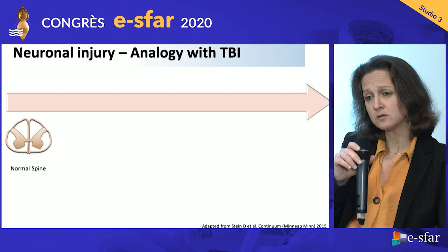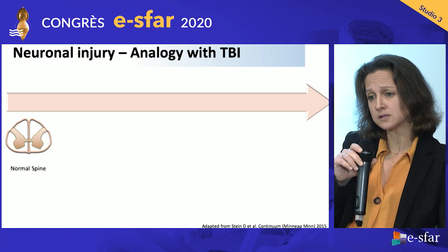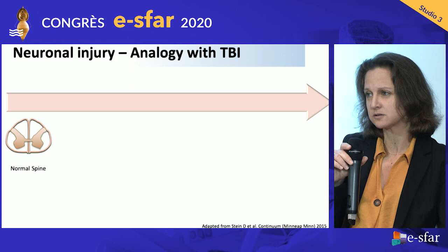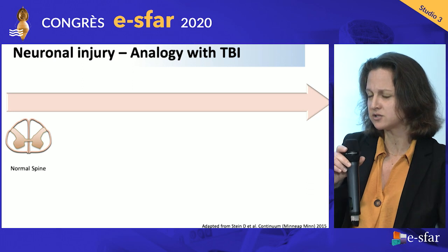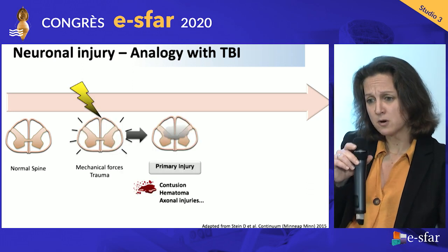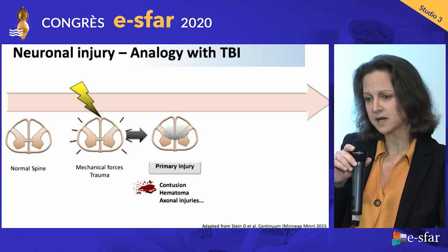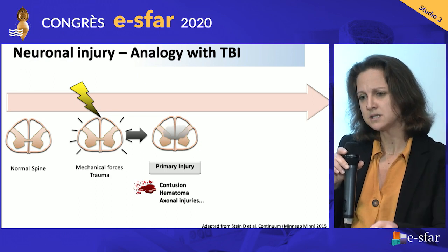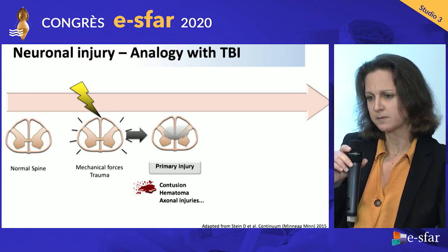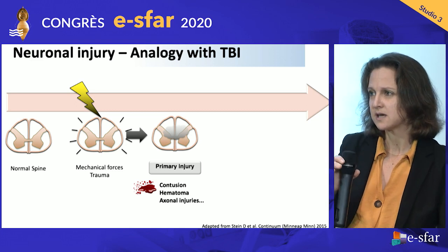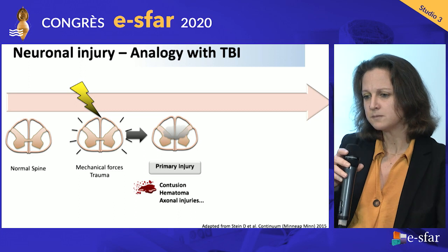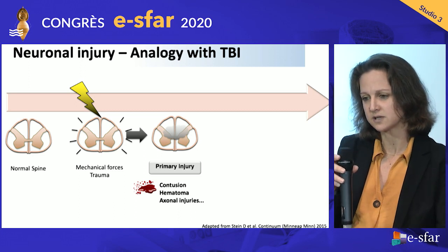When it comes to spinal cord neuronal injury, it has some analogy with traumatic brain injury. At the moment of the impact, you have mechanical forces creating immediate tissue disruption in the spinal cord, leading to primary injuries. This gathers all the contusions, hematomas, and axonal injuries, for example.